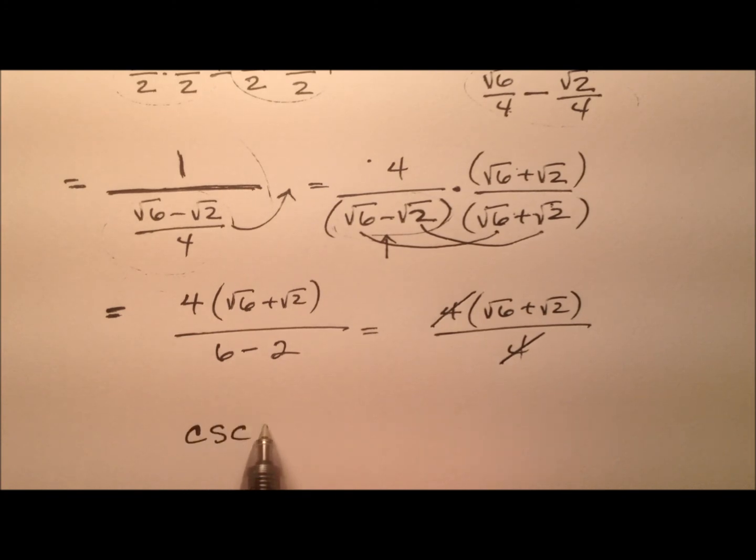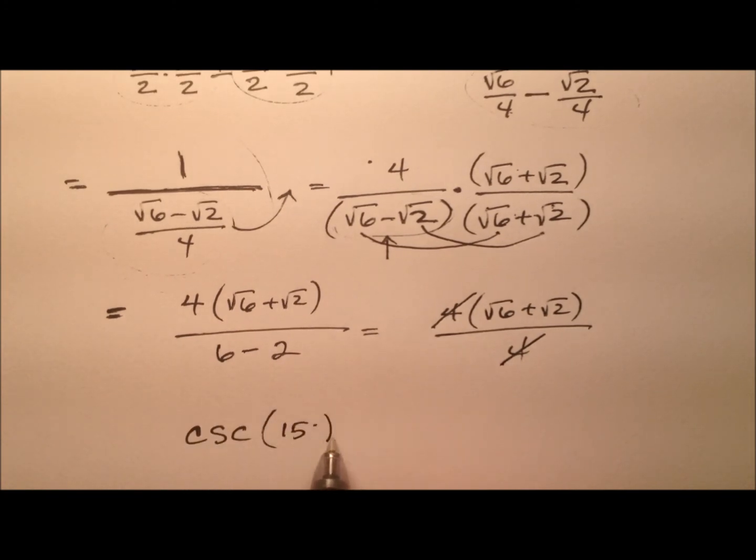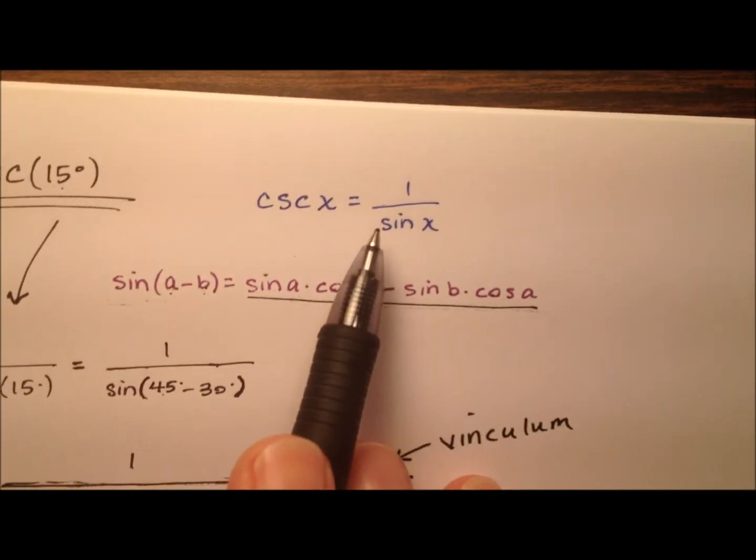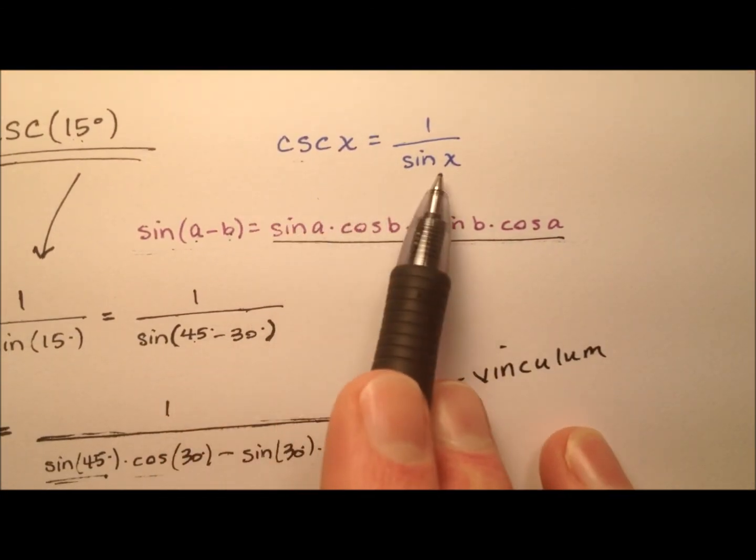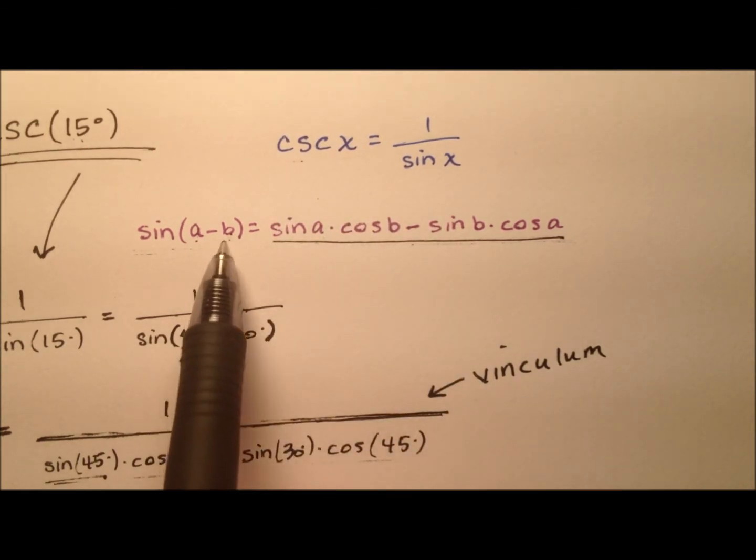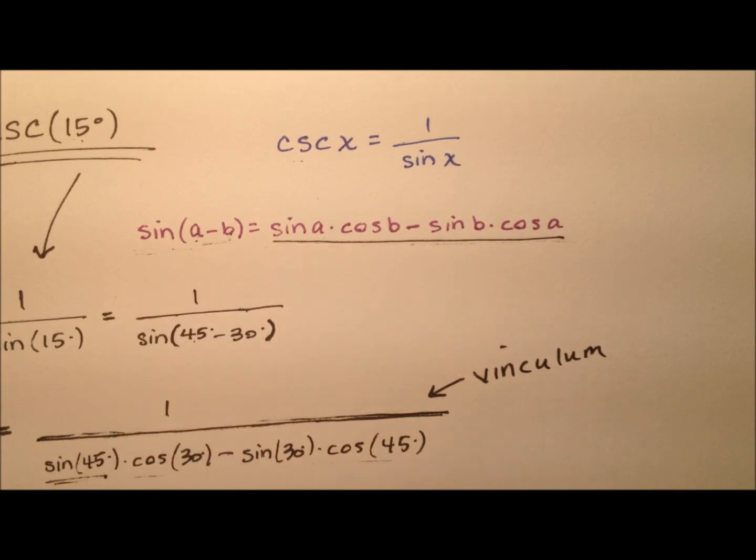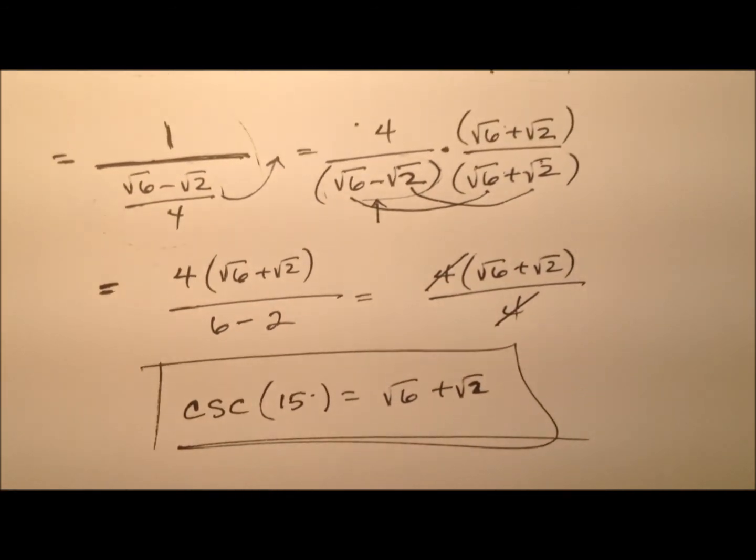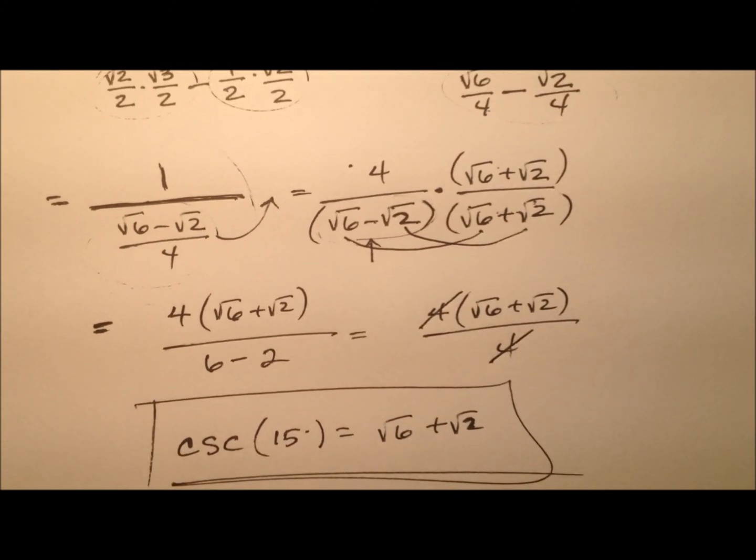So the cosecant of 15 degrees is √6 + √2. There we have the exact value for cosecant of 15 degrees. We found this by using the relationship that cosecant and sine are reciprocal functions, then we used the difference formula for sine and simplified to get our exact value.